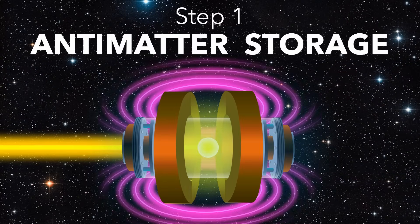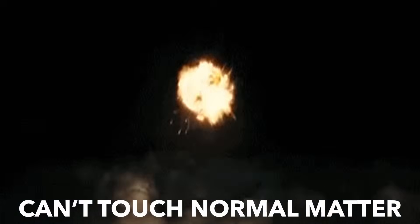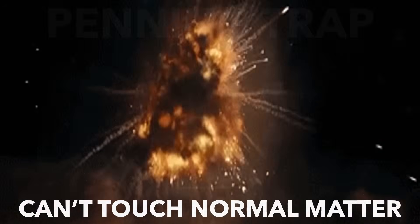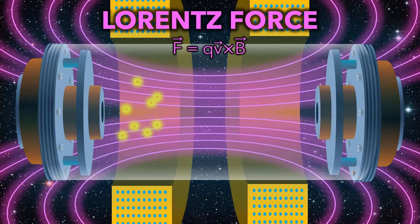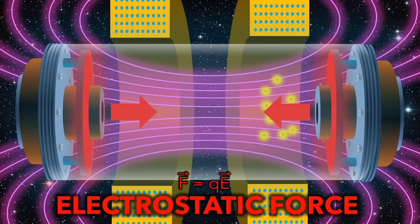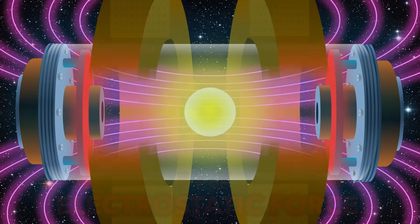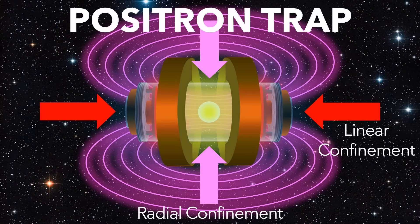Step 1, antimatter storage. If antimatter touches the matter in the container walls, it will explode. Penning traps avoid this by using magnetic fields to trap the positrons in a circular orbit, and electric fields to push them to the middle. The antimatter is now confined without any physical contact.